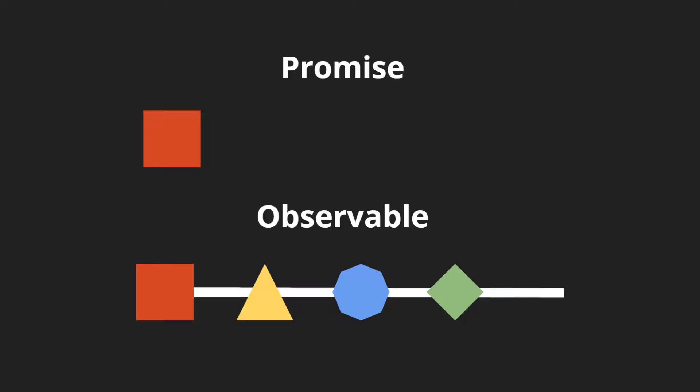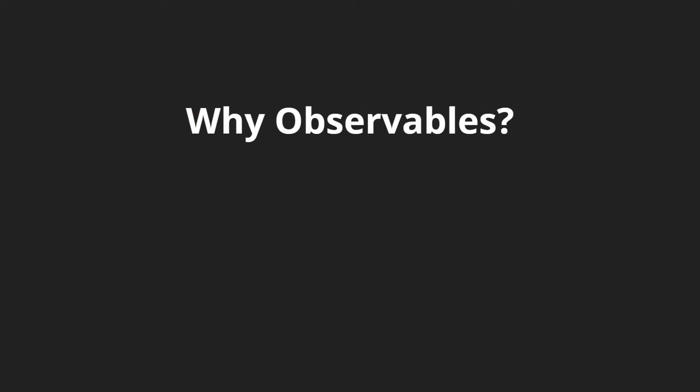Let's take a look at some examples of how this can help us. Why do we want to use observables? Observables can handle multiple events — just like we saw in that data stream, we can handle all of those events. Observables are also cancelable. For example, if we're creating an autocomplete box where we type in O-B-S-E, and as we type each letter we want to make a request to get information, we can cancel all of the previous calls so that only the latest call is being used.